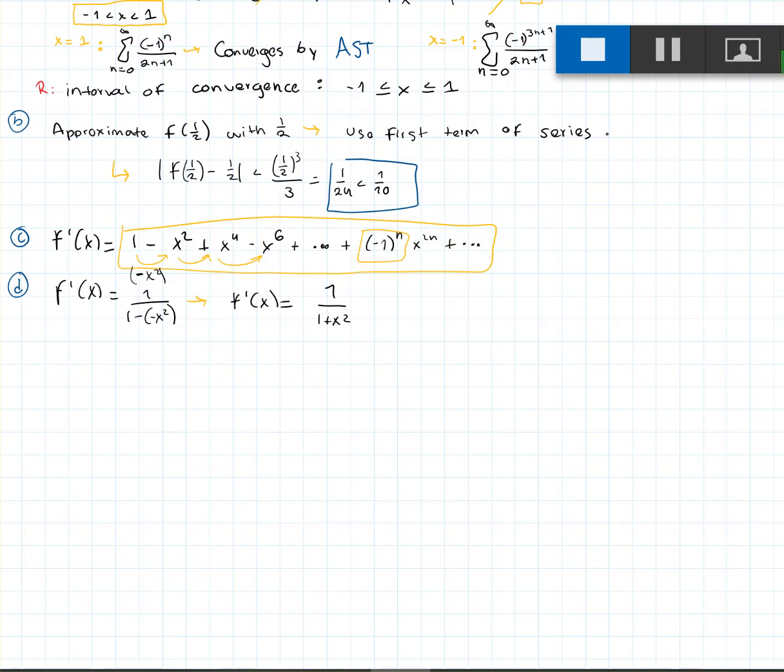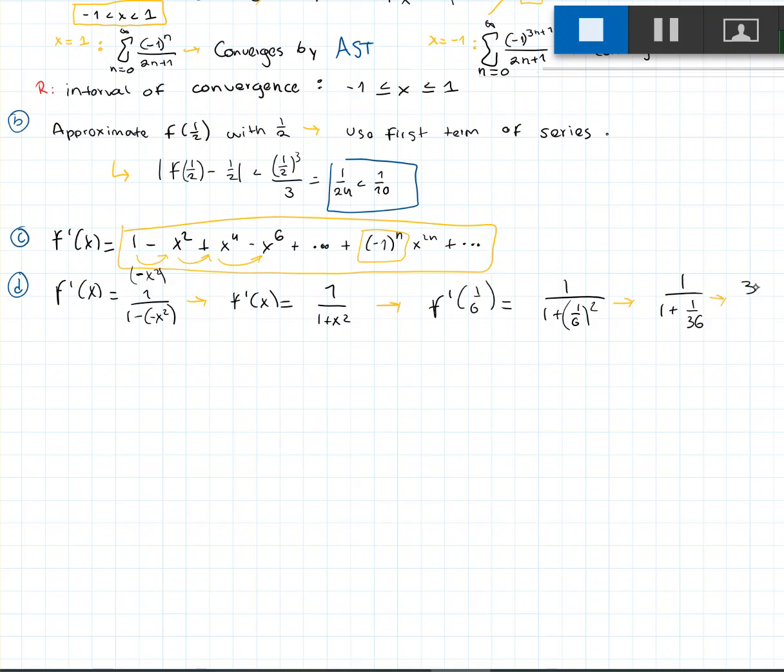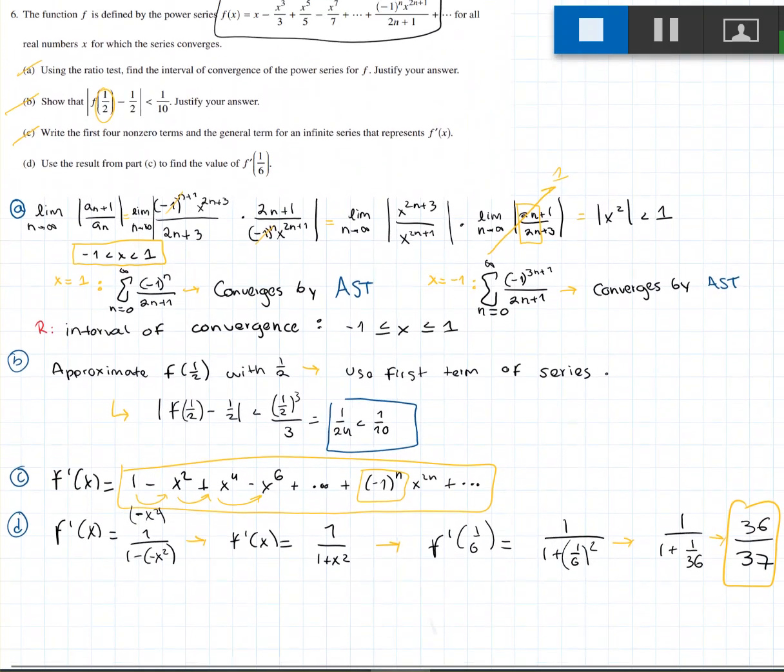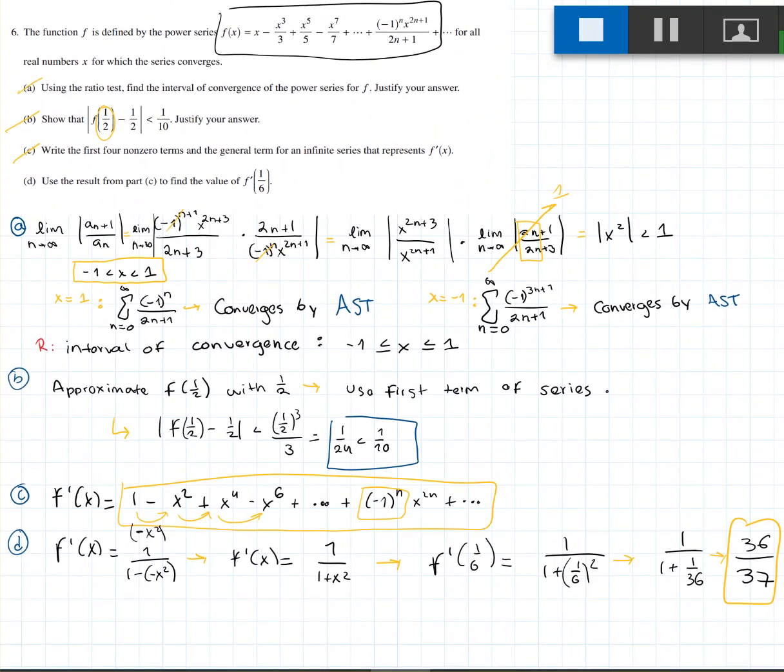If we just plug now the 1/6 that we're given in the question, f'(1/6) into this equation, we get 1 over 1+(1/6)^2, which ends up getting us 1 over 1+1/36. Which if you add 1+1/36, we just know that you add 1/36 to 1, which is 36/36, 37/36, which ends up being our final answer to this question. And we've completed the sixth question in just under 9 minutes.